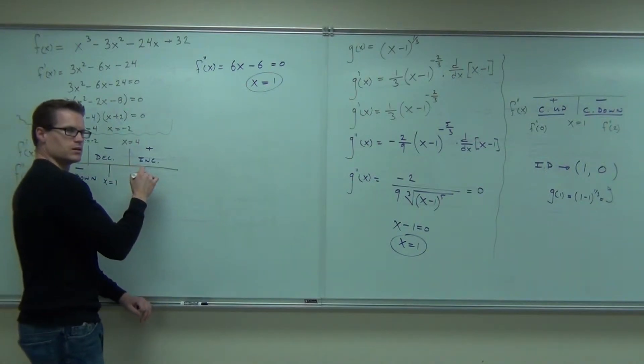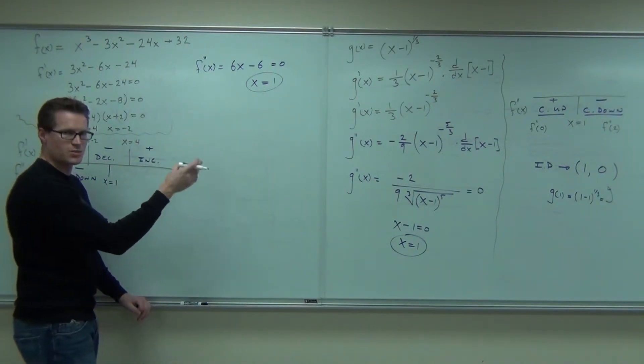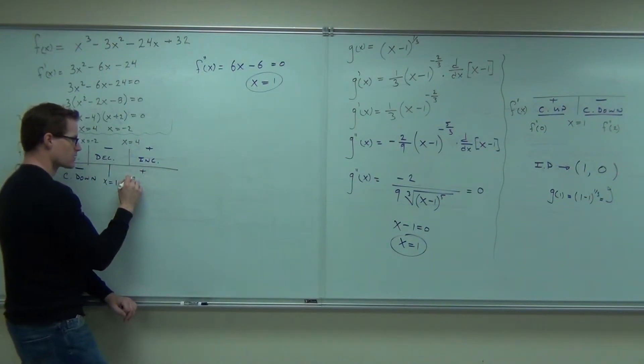Does that mean concave up or concave down? This one? Good, because if you plug in something like 2, you're going to get 12 minus 6. That's positive 6. That's positive. Concave up.